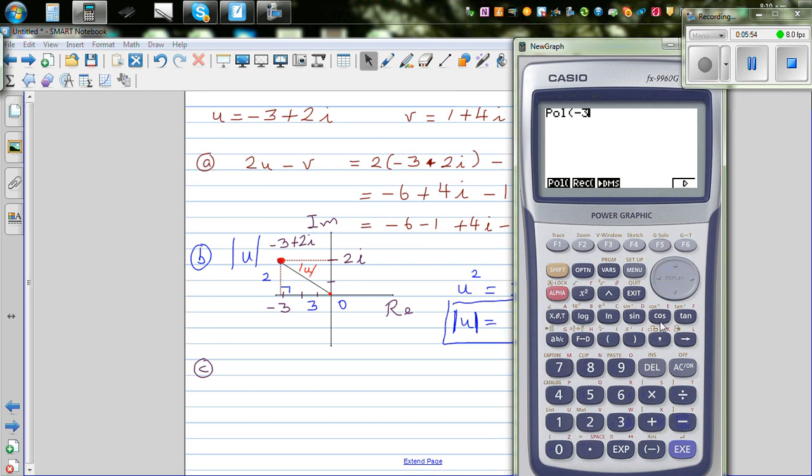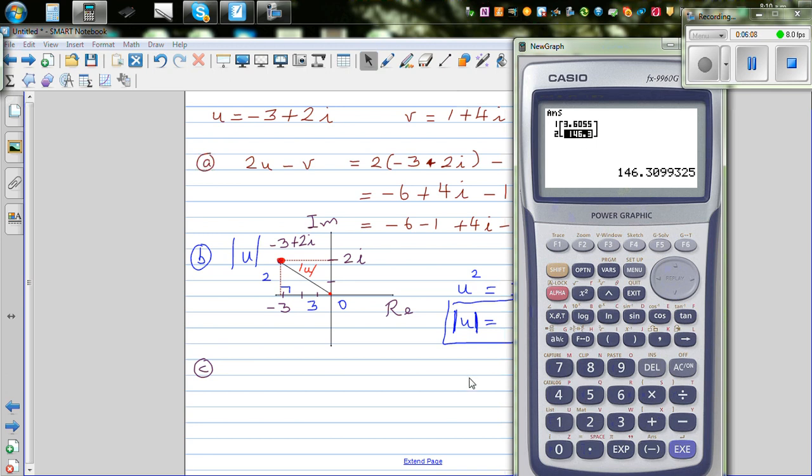The first number tells you the radial distance, which is 3.60. And the second number is the argument. So let's find argument of u. In some books they write it like this: argument of u.